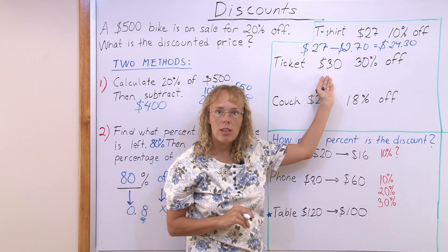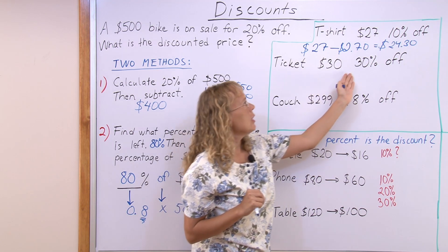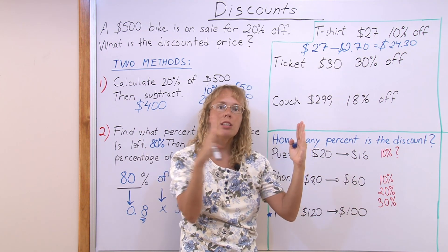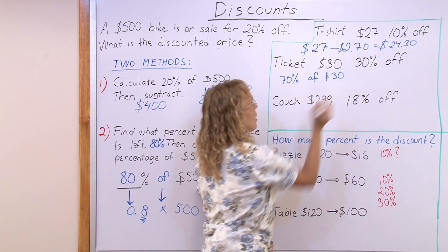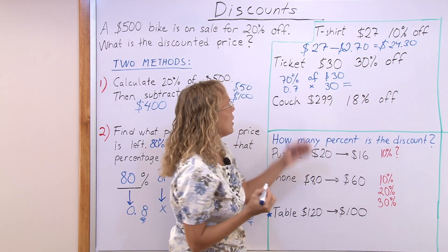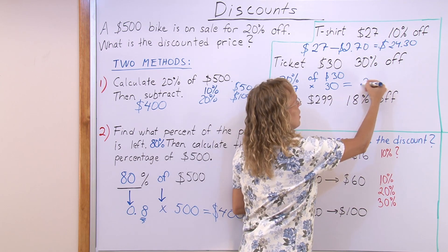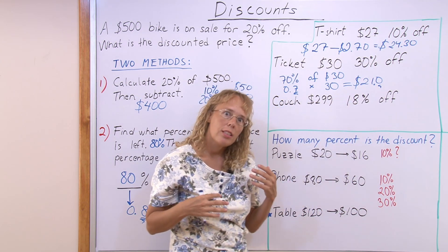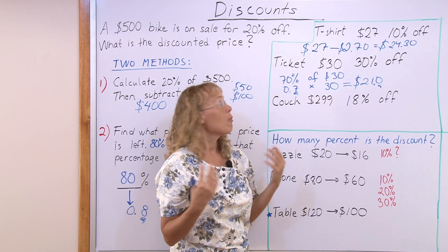A ticket costs $30 and it is 30% off. Let's use the second method to calculate the discounted price. 30% off means the total 100% minus 30% leaves 70% of the price. We calculate 70% of $30, which translates into 0.7 times 30. Multiply first without the decimal point: 7 times 30 is 210. There is one decimal digit in 0.7, so there is one decimal digit in the answer too — $21. Or just go 7 times 3 is 21, and obviously the answer is $21.